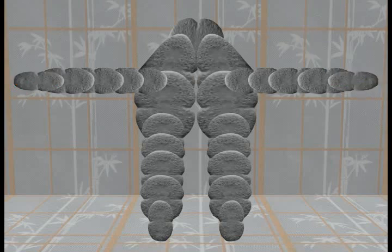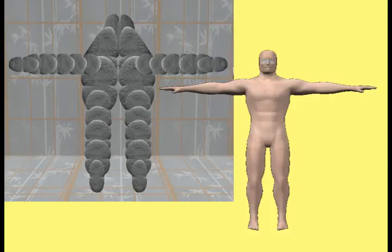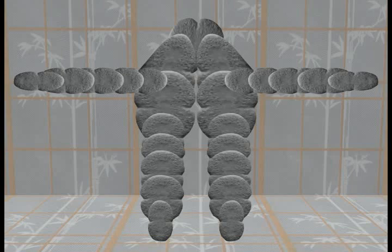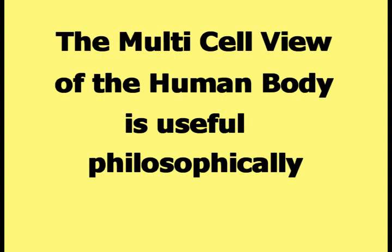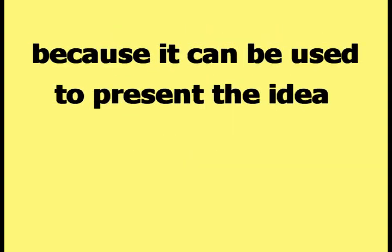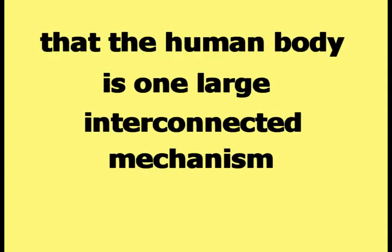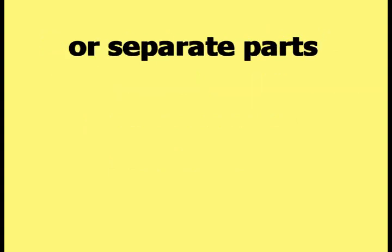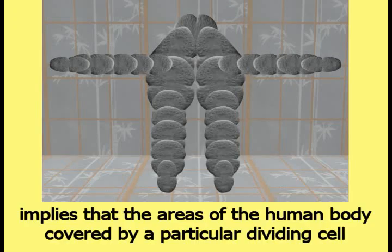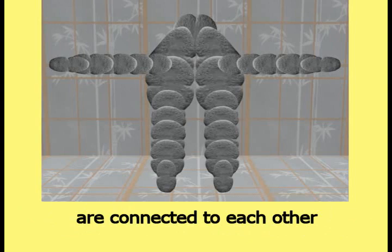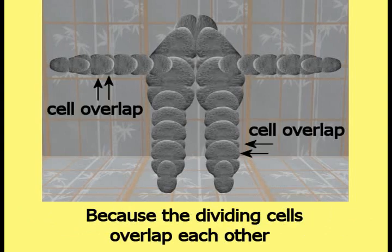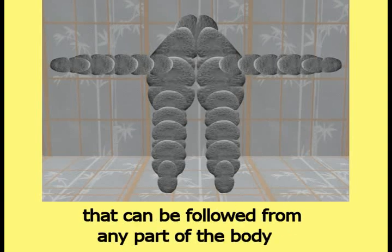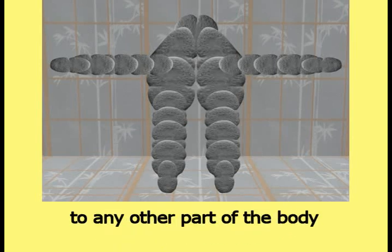The grouping of dividing cells in this picture forms the shape of a human body. This picture represents the multi-cell view of the human body. The multi-cell view is useful philosophically because it presents the idea that the human body is one large interconnected mechanism, as opposed to a collection of discrete or separate parts. Every dividing cell in the picture implies that the areas covered by a particular dividing cell are connected to each other, and because the dividing cells overlap they form a chain from any part of the body to any other part.